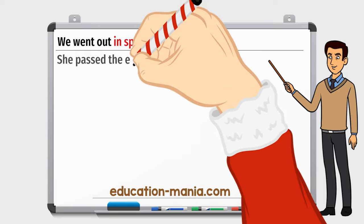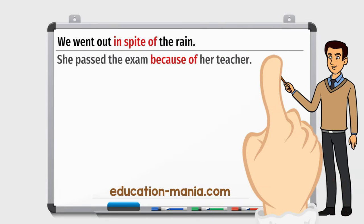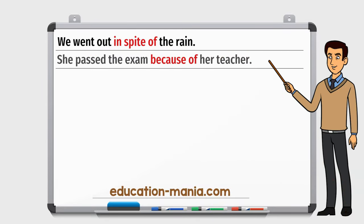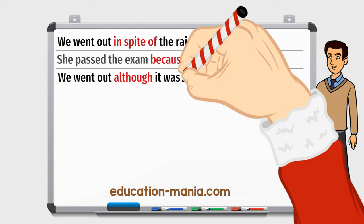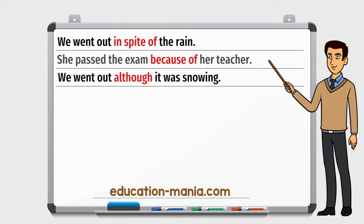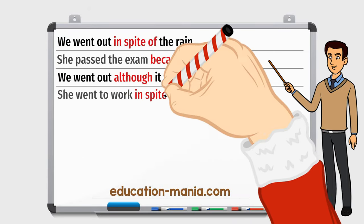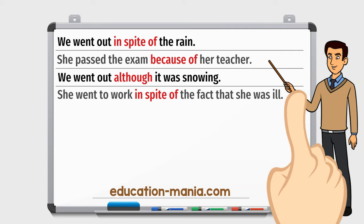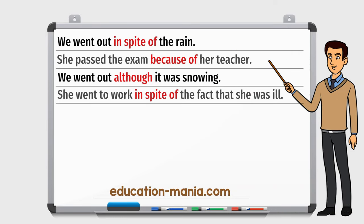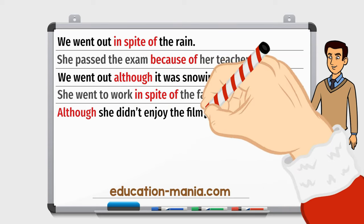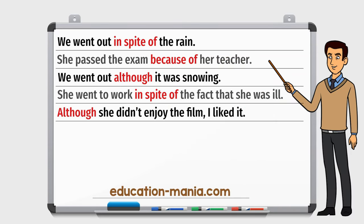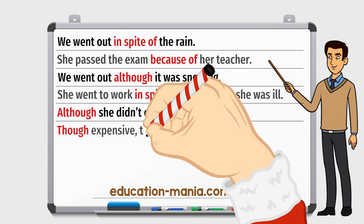She passed the exam because of her teacher. We went out, although it was snowing. She went to work, in spite of the fact that she was ill. Although she didn't enjoy the film, I liked it. Though expensive, the watch was very good.